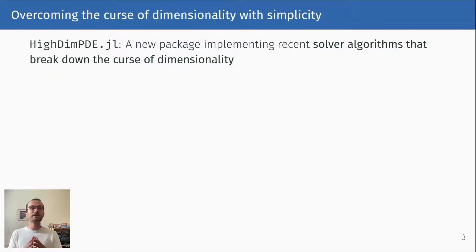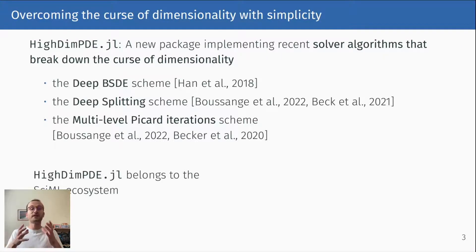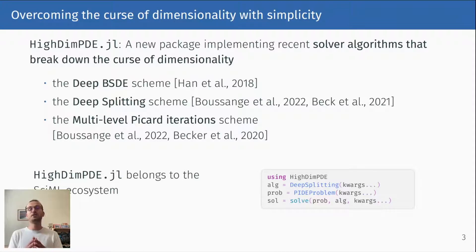HighDimPDE.jl is a new package which implements recent solver algorithms that break down the curse of dimensionality and whose computational complexity only scales polynomially in the number of dimensions. HighDimPDE.jl belongs to the SciML ecosystem, which means that it respects the associated syntax. This makes it a very user-friendly package.